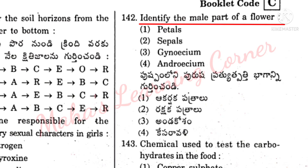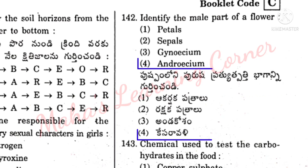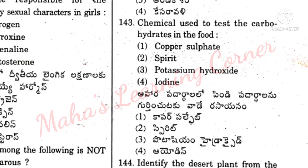Identify the male part of the flower. Poshponno ni purusha prathji bhagani guttin chandhi. Correct answer, Option 4: Androecium. Kassar avali is the correct answer.